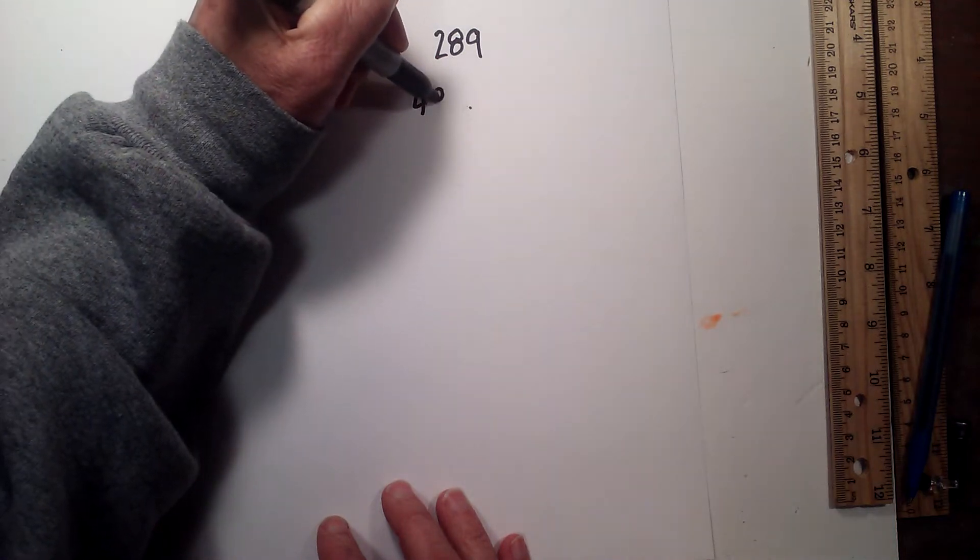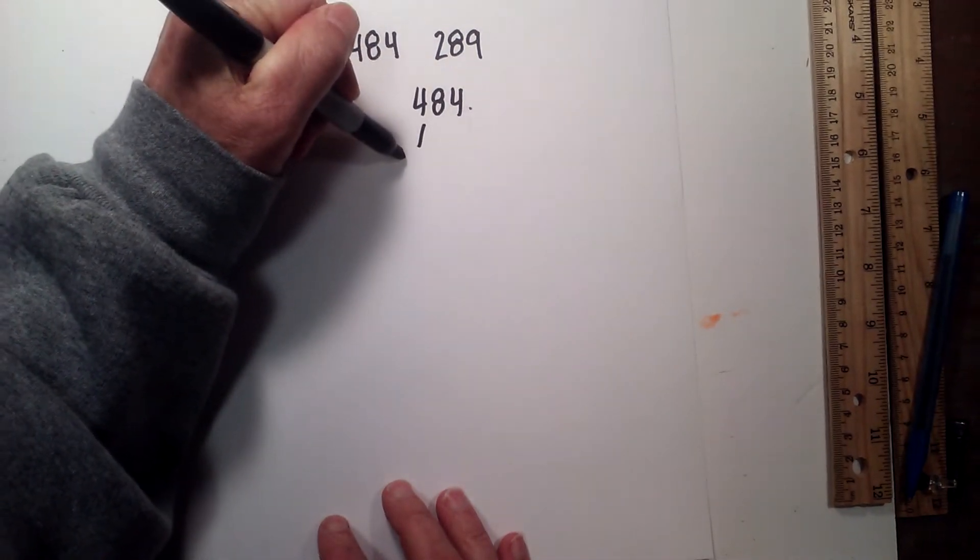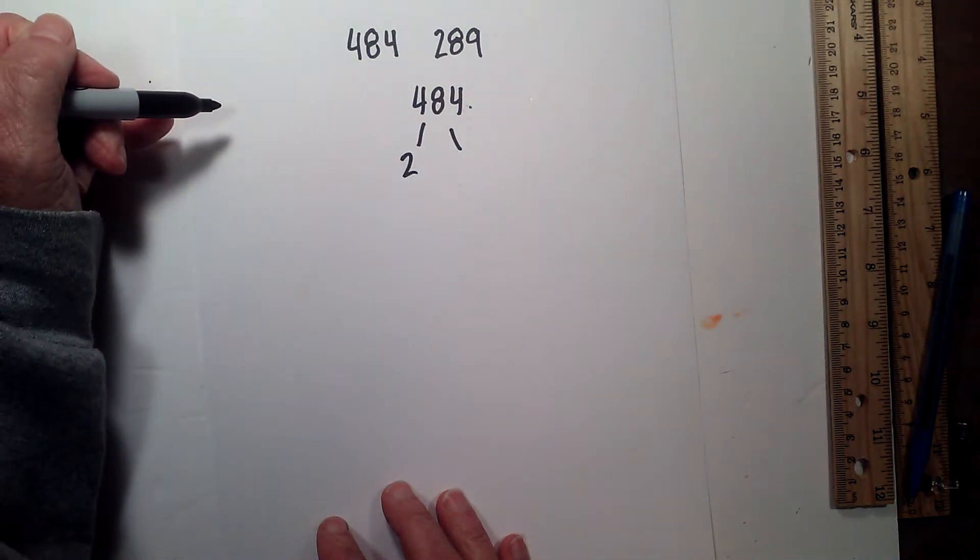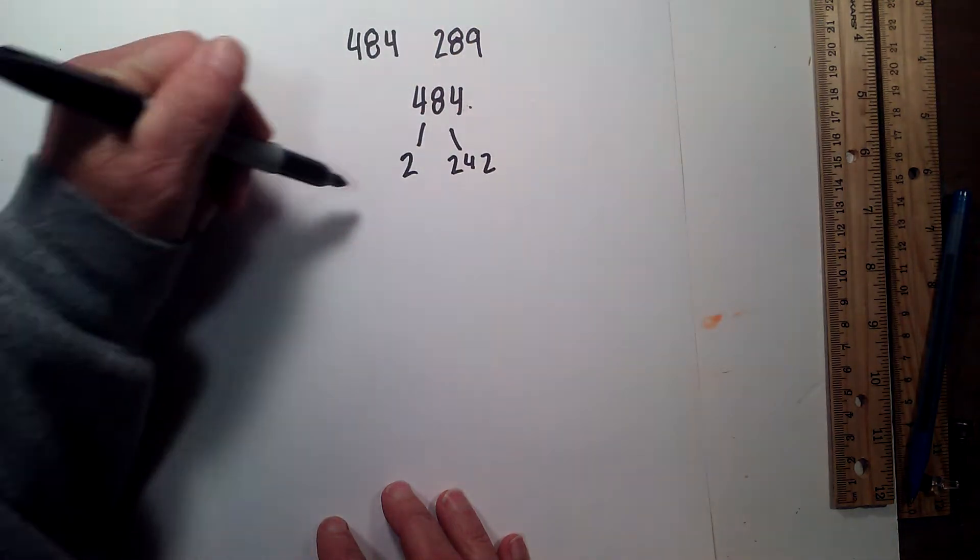I like to use a factor tree so I will write out 484. I like to start with 2 if possible. 2 times 242 equals 484.